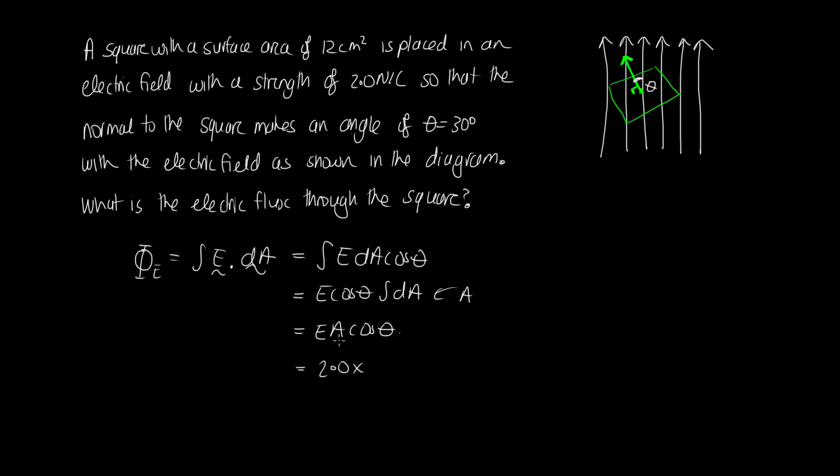So we've got E is 2. We've got the area is 12 centimeters squared. So to get that into meters squared we'll need to times it by 10 to the minus 4. So if it was centimeters, it would be 10 to the minus 2. But because it's centimeters squared we times the 10 to the minus 2 and we end up with 10 to the minus 4. And then we times by cos of θ which is 30 degrees.